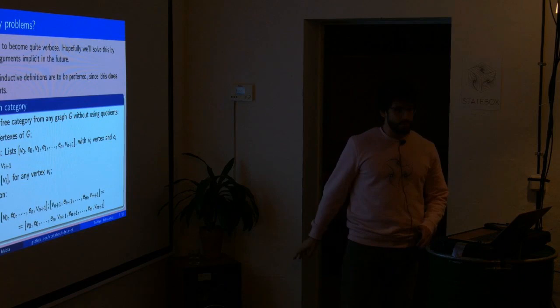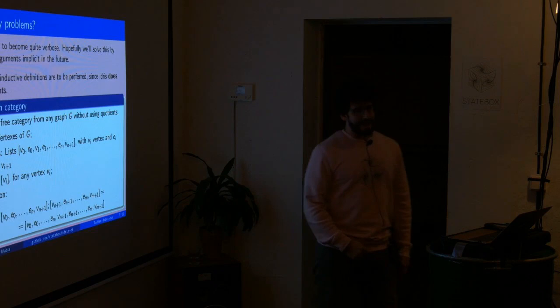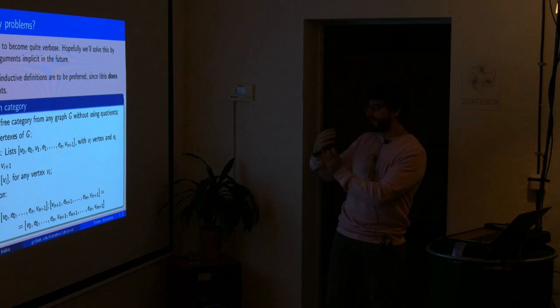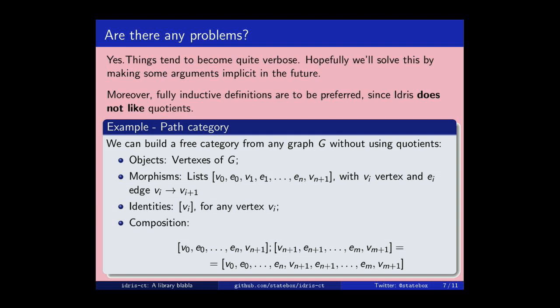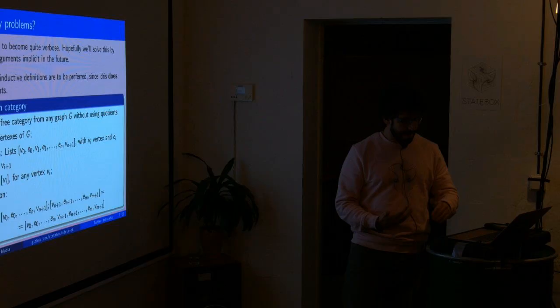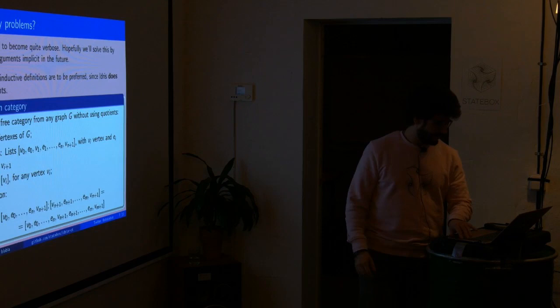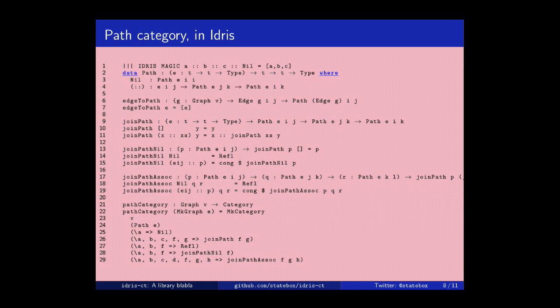But if you try to do the same thing with a symmetric monoidal category, then everything is horrible. Because for instance, in a symmetric monoidal category, you have to enforce some equations that say, if I slide boxes in a certain way, nothing changes. And we don't really have a data structure that is able to naively represent this. So I would love at some point to say, oh, actually I have to enforce that this thing is equal to this other thing. And that's where, you know, quotients pop out and destroy all our dreams. So this is the implementation of a path category in Idris, for instance. So this is exactly equivalent in code to this thing.